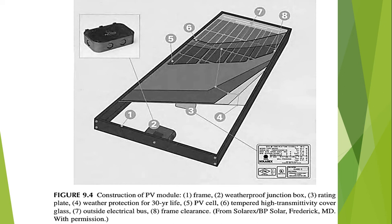The aluminum frame can be silver or anodized black depending on the panel manufacturer. The corner sections can either be screwed, pressed, or clamped together, which may vary the level of strength and stiffness provided.